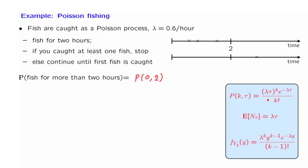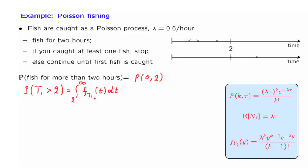We will just be writing down the expressions that give us the answers. Now, in this question, we could take a different approach. You will fish for more than two hours if and only if there are no arrivals during the first two hours, which means the first arrival in the Poisson process happened after time 2. So we are looking at the probability that T₁ is greater than 2, which is the integral of the density of the first arrival time from 2 to infinity. Since this density is exponential, we can write down and evaluate this integral.